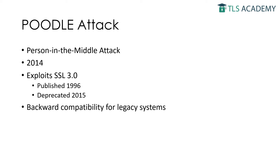SSL 3.0 was published in 1996 and replaced by TLS 1.0 already in 1999. The POODLE attack in 2014 showed that there is no secure way at all to implement SSL 3.0. The protocol was subsequently deprecated in 2015 by RFC 7568.